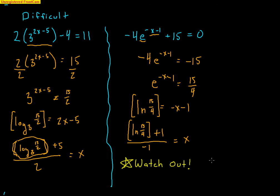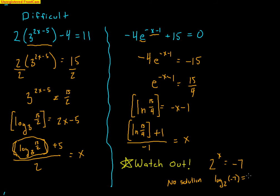Watch out: if you ever get something like 2^x = −7, this has no solution — 2 raised to any number can never be negative. It could be a small fraction or a large positive value, but it is never negative. Thinking in terms of logs: log base 2 of −7 = x is impossible — you can never have a negative number inside a log. So if your exponential equals a negative, there is no solution.